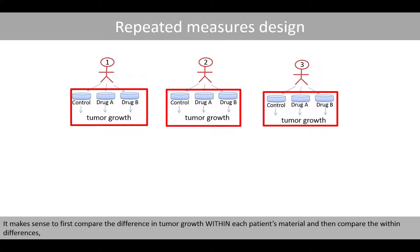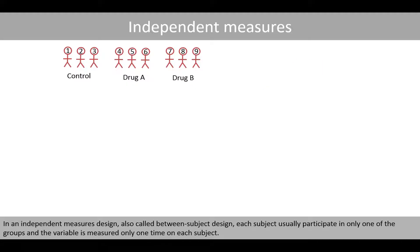It makes sense to first compare the difference in tumor growth within each patient's material, and then compare the within differences, rather than first calculate the means of the three subjects and then compare these mean values between the different treatments. In an independent measures design, also called a between-subject design, each subject usually participates in only one of the groups, and the variable is measured only one time on each subject.